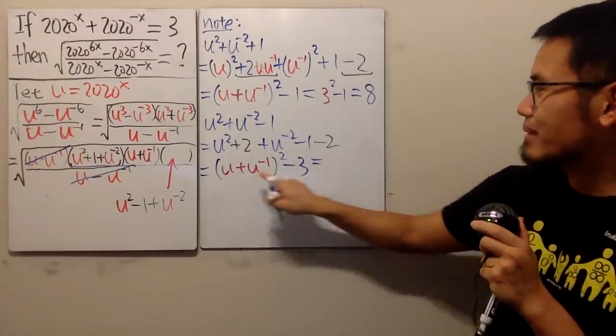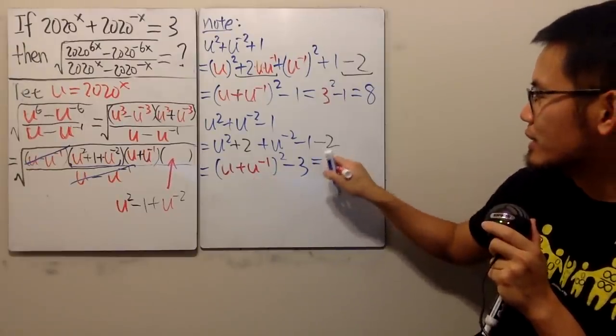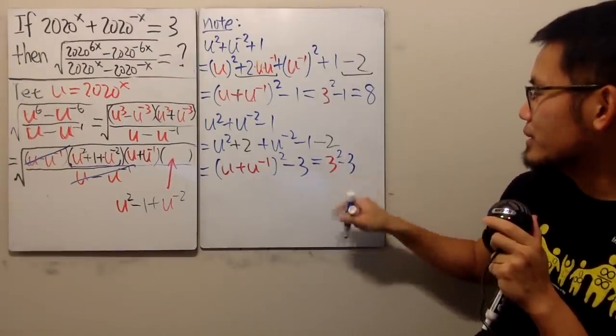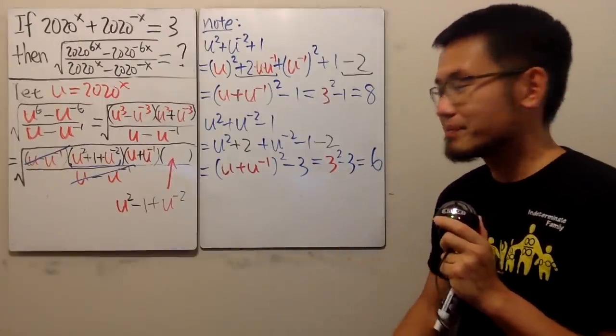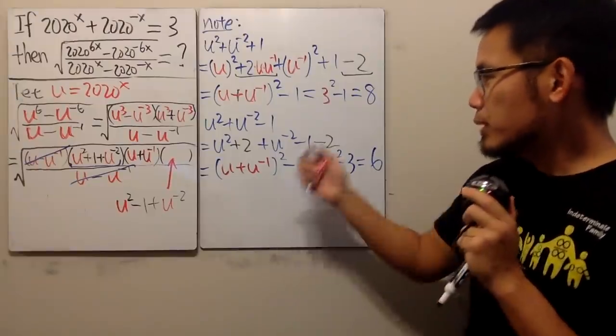All right, put the three right here. So we have three squared minus another three. All in all, this right here is just going to give us six. Very good. So that's pretty much it. We have all the stuff that we need.